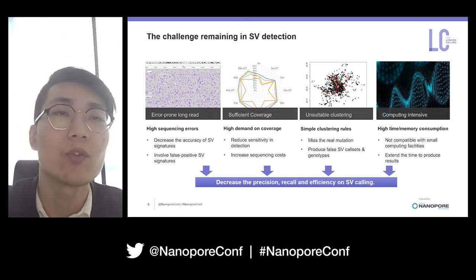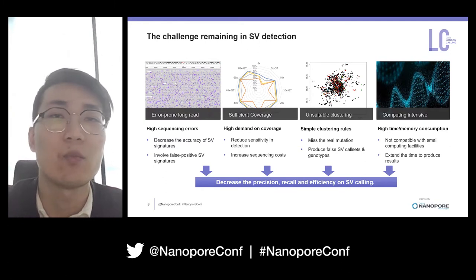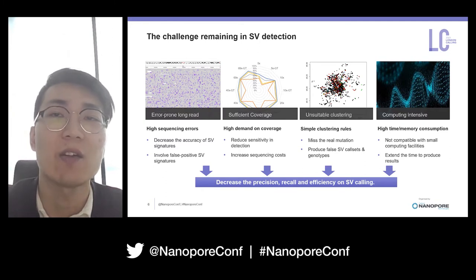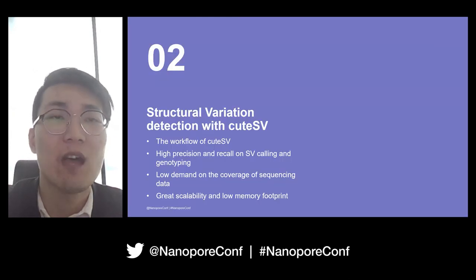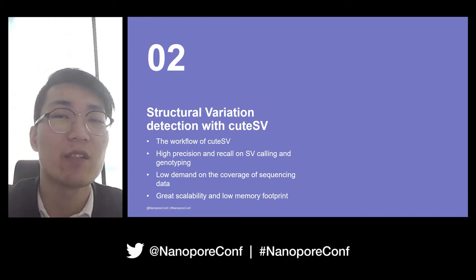To break these bottlenecks, we present Qtai3, an alignment-based structural variation detection method. Now I'm going to talk about structural variation detection with Qtai3.